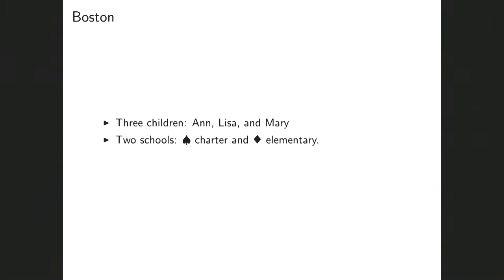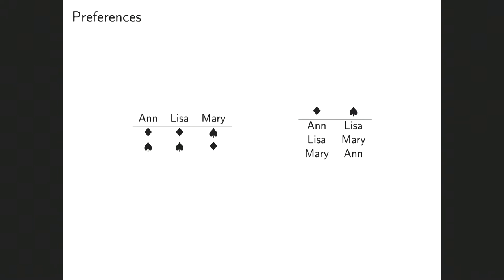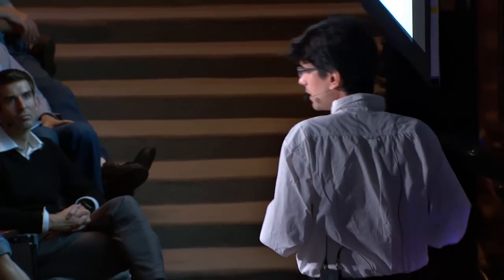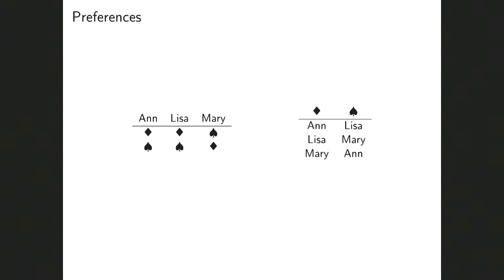Here's a really trivial example that illustrates the problem. Suppose you have three children — Ann, Lisa, and Mary — and two schools: Spade Suit Charter and Diamond Elementary, each with one seat. Diamond is a popular school and both Ann and Lisa would rather go to Diamond; Mary has the opposite preference and would like to go to Spade. The schools have priority rankings over students based on things like test scores, having a sibling in the school, or living within walking distance. Diamond ranks the children Ann, Lisa, Mary; and Spade ranks the children Lisa, Mary, and Ann.